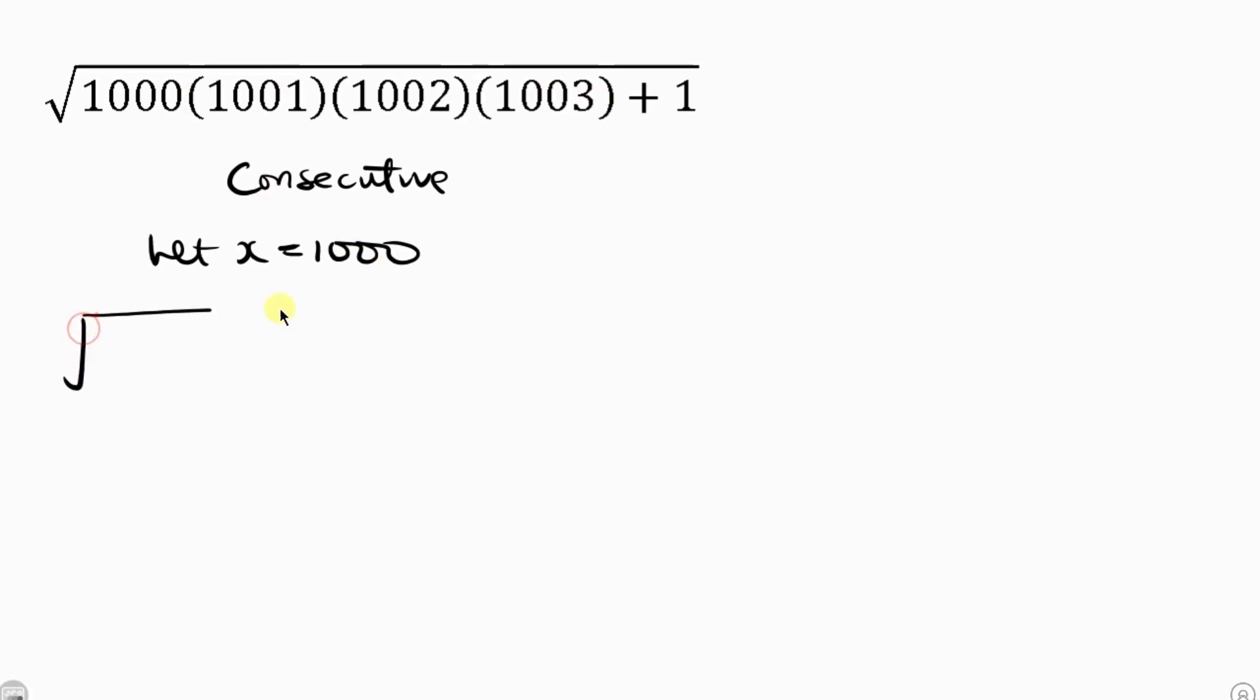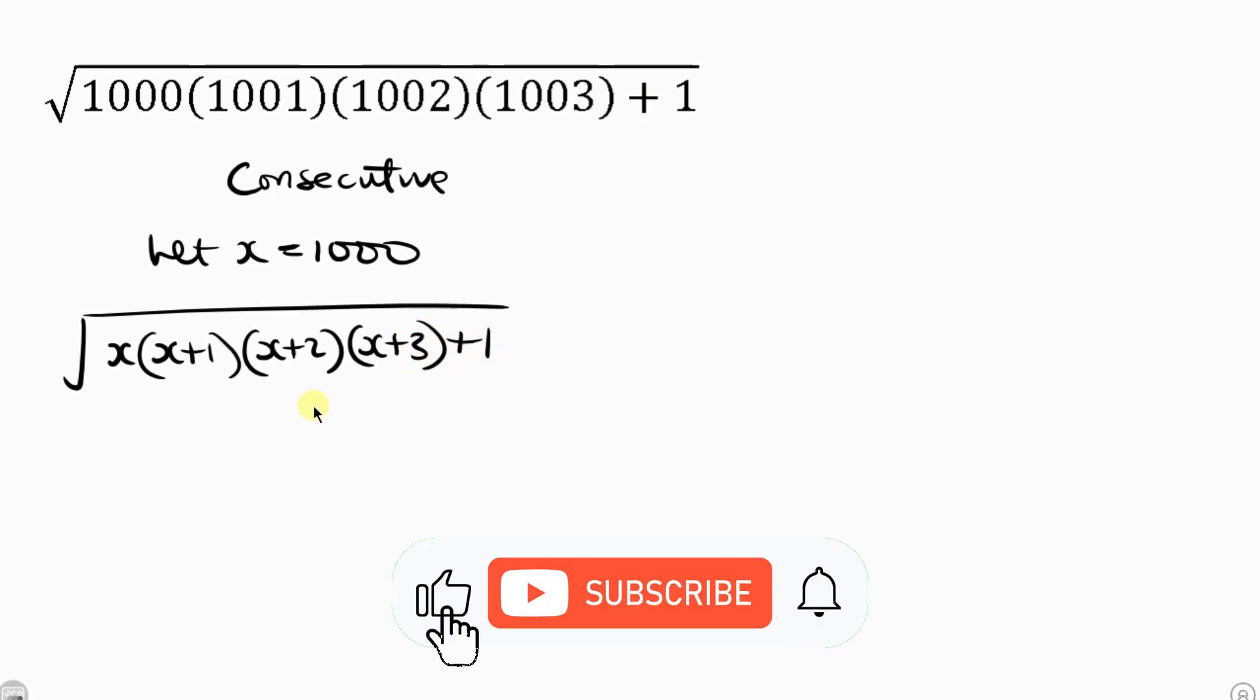So our expression becomes the square root of x times x plus 1 times x plus 2 times x plus 3 and then plus 1. Now our next step will be to pair x with x plus 3.